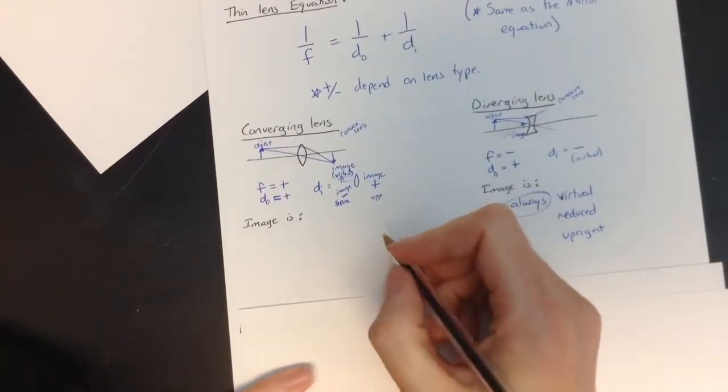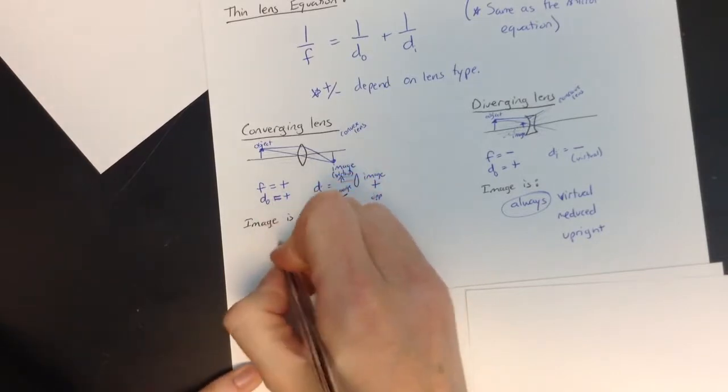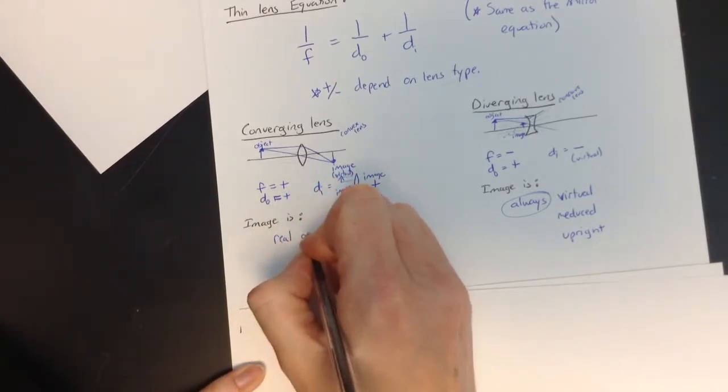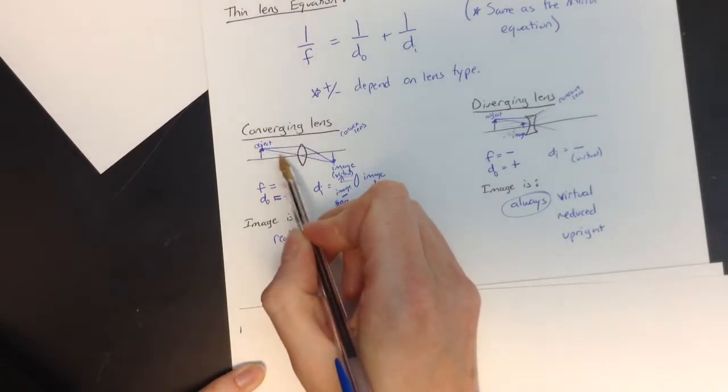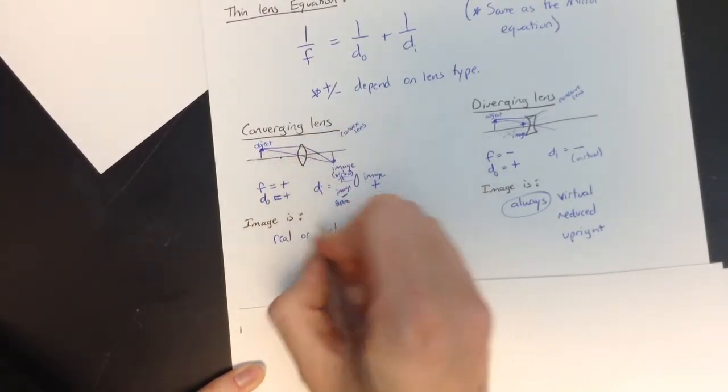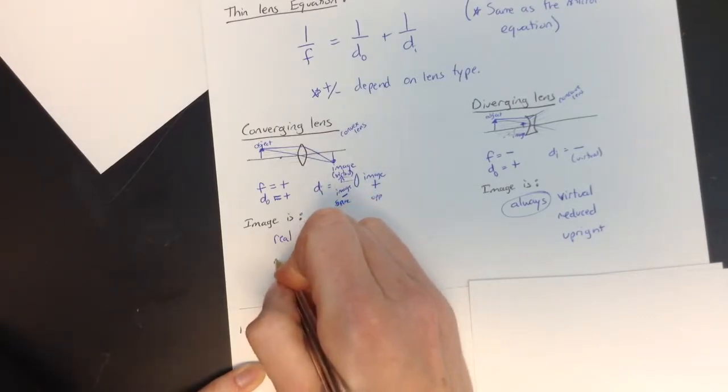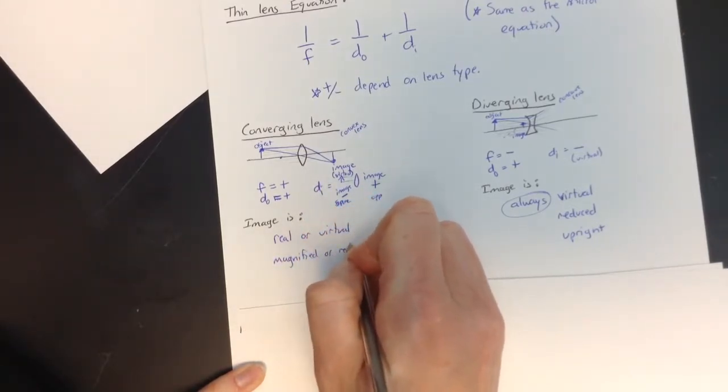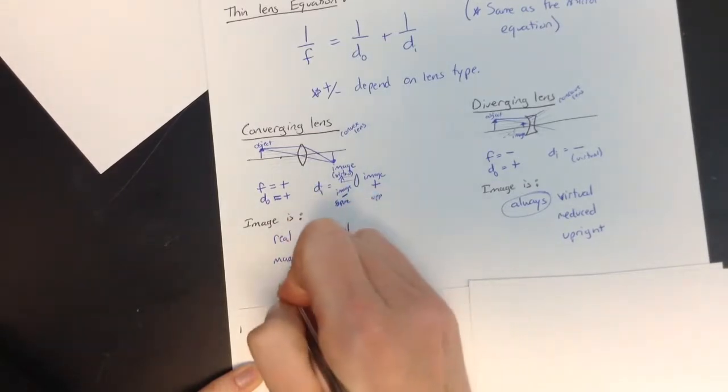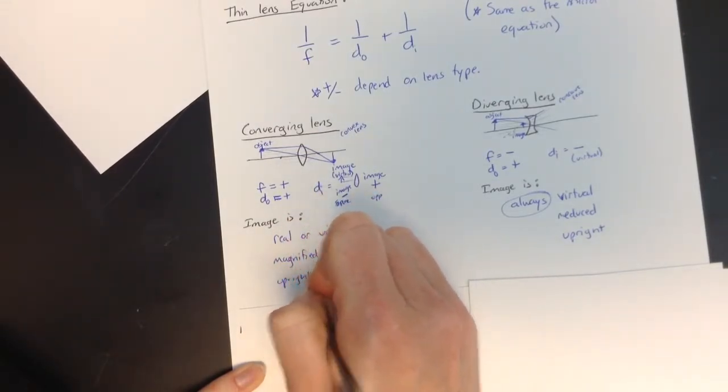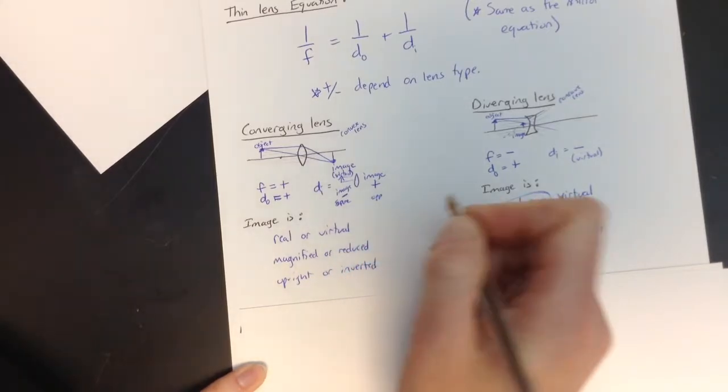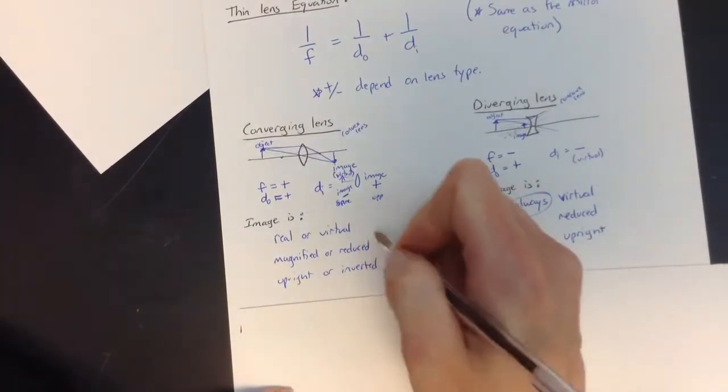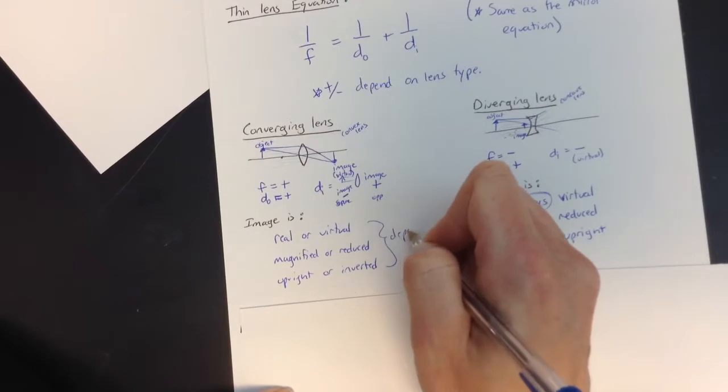But on a converging lens, it could be either or, real or virtual, and it depends on the placement of the object over here relative to the focal length. So it could be real or virtual, it could be magnified or reduced, and it could be upright or inverted. And that depends on the placement of the object.